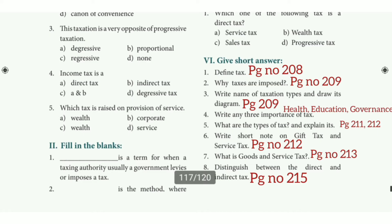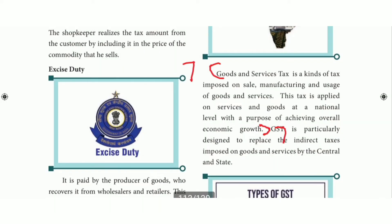Seventh question: what is Goods and Service Tax? Refer to page 213, right side, one paragraph, first line to sixth line — Goods and Service Tax and economic growth — that is two lines.